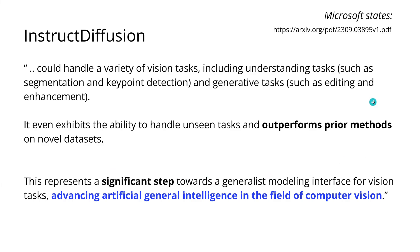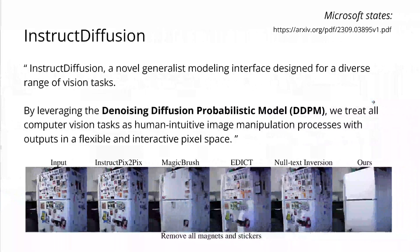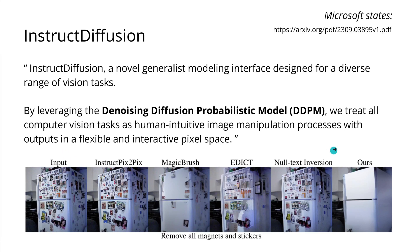It is based on the denoising diffusion probabilistic model — you may remember my last video where we went through all the different diffusion models. They give a very impressive demonstration: given an image of a fridge covered in stickers and magnets, you simply say 'remove all magnets and stickers,' and the result is produced. Comparing to other models, their model is the best.